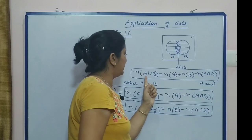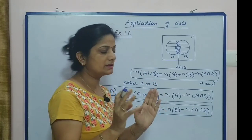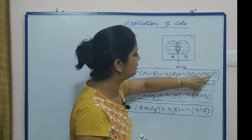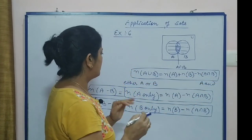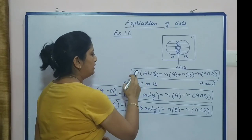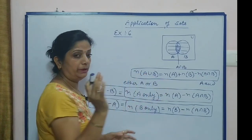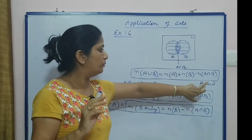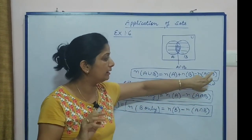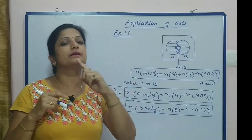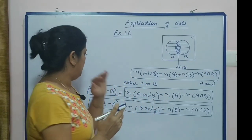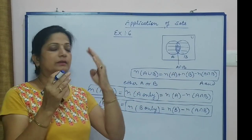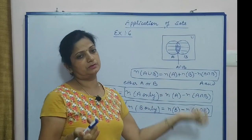If we calculate number of A union B, this equals number of A plus number of B minus number of A intersection B. Suppose you are given either A or B — that means A union B — and when we have A and B that is A intersection B. There are four factors; three are given and the fourth is to be calculated.